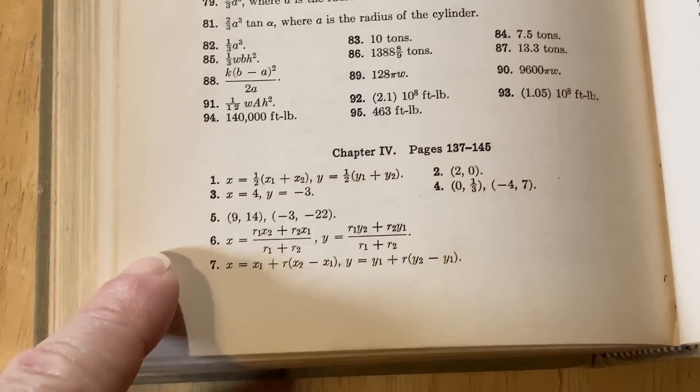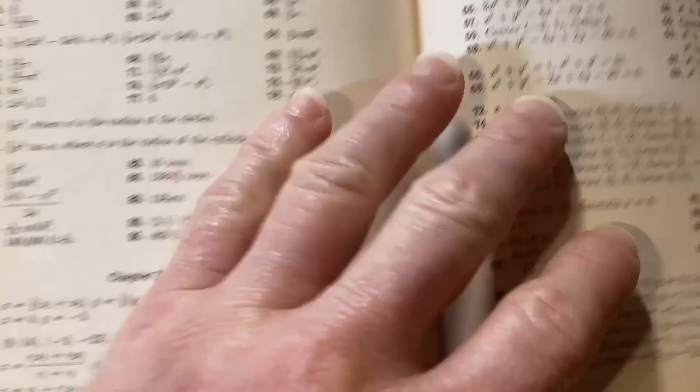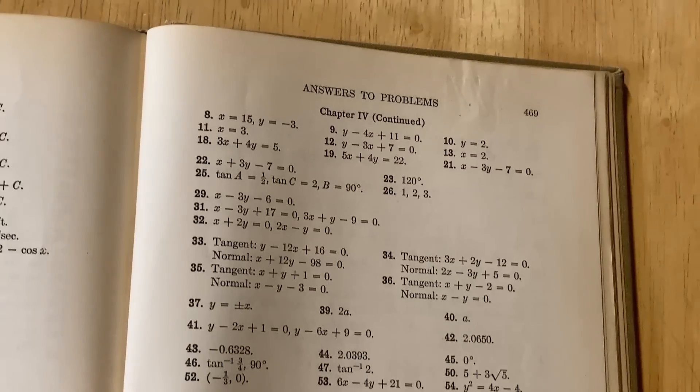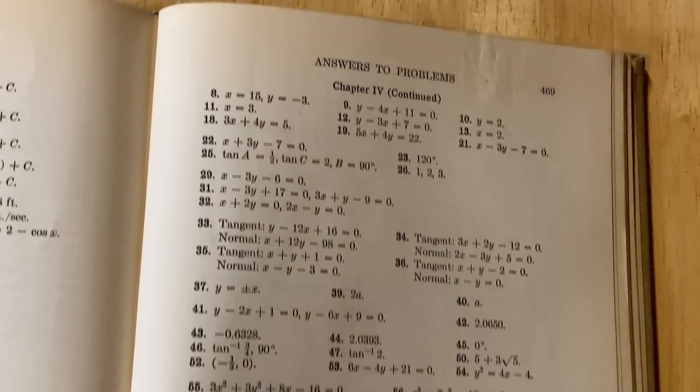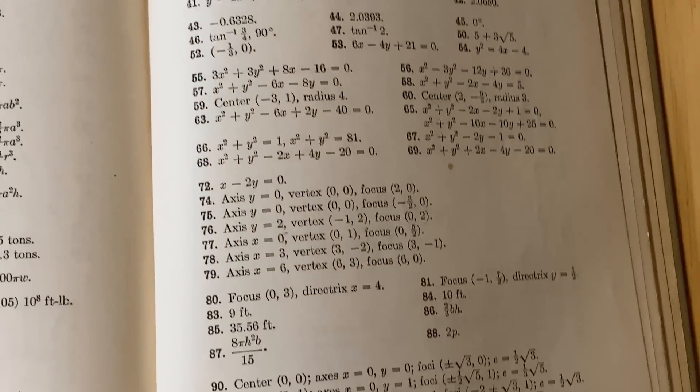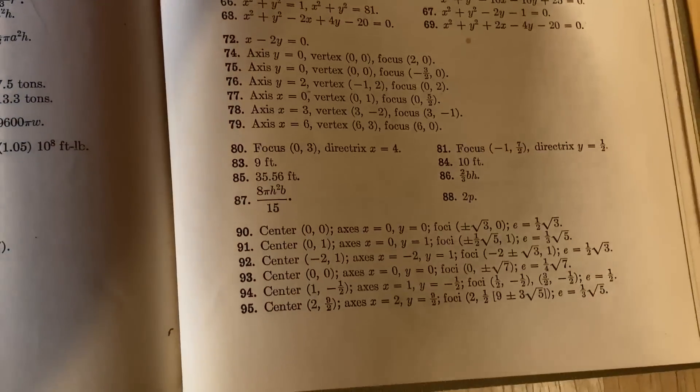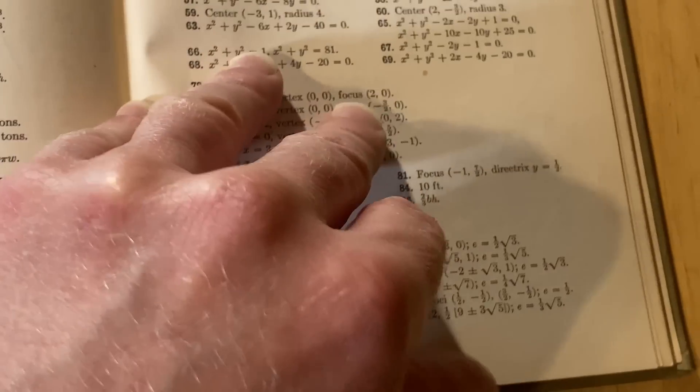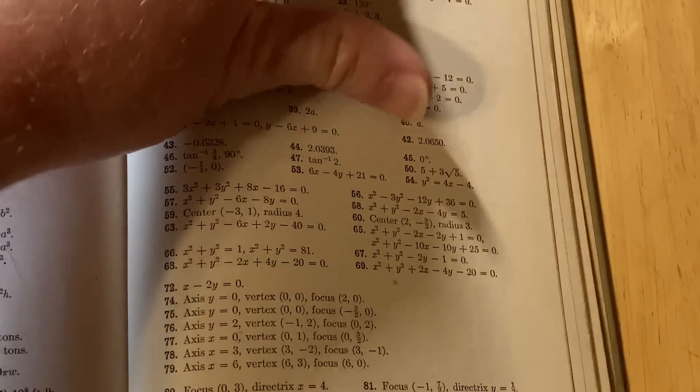Here you can see some of the answers. Pretty much everything is there. I think it's not there if it's like a graph or if it's a proof, but if they can give a short answer, they will give an answer. Or he rather. This book was written by one person, the legendary H.B. Phillips. He was the boss of the MIT math professors for many years.